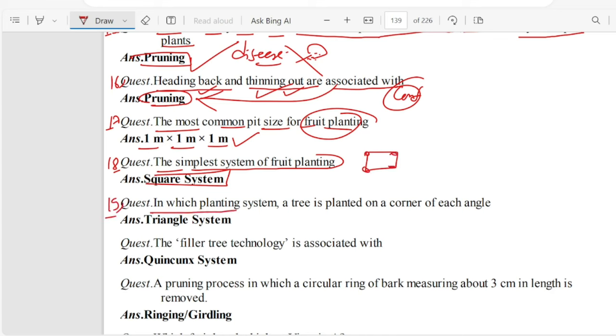Question 19. In which planting system a tree is planted on a corner of each angle? Triangle system.